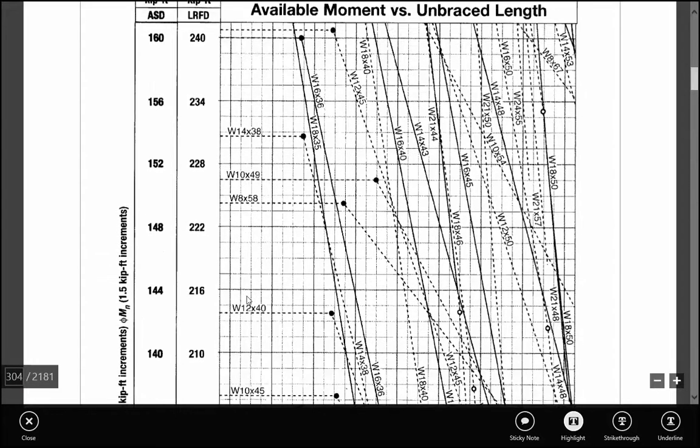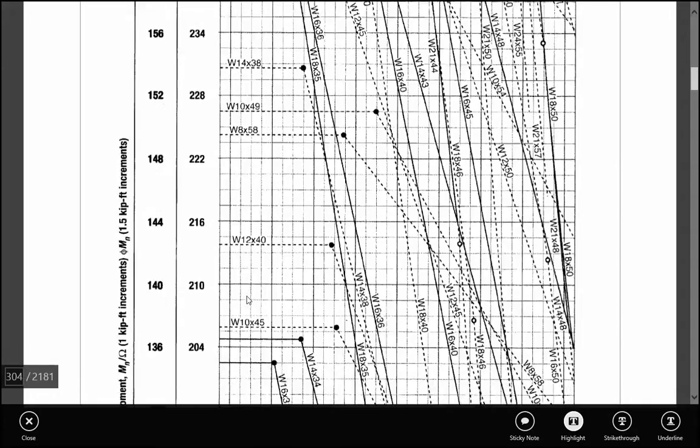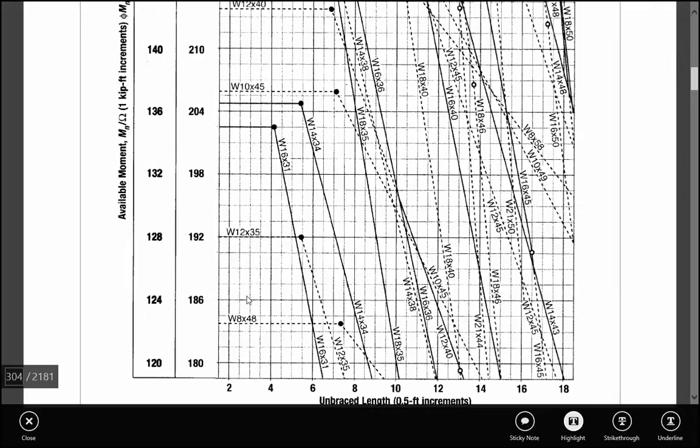We can find W10x49. And then based on the unbraced length of 17 feet, we can see that the moment strength is 197 ft-kips.